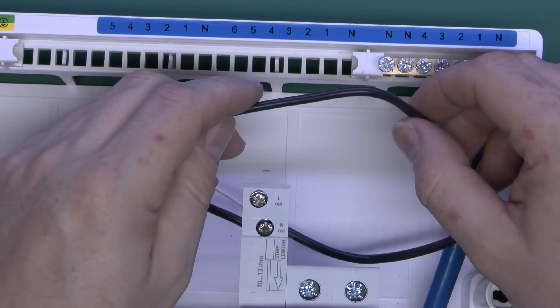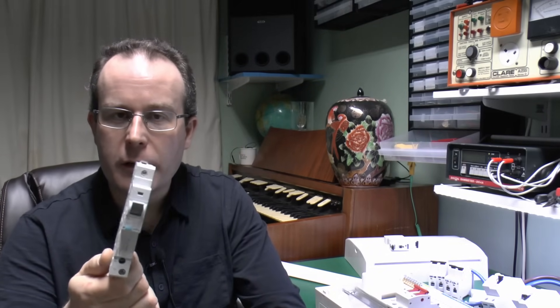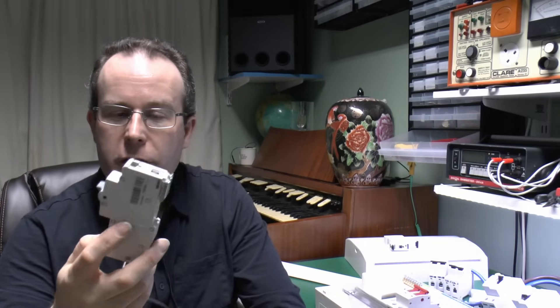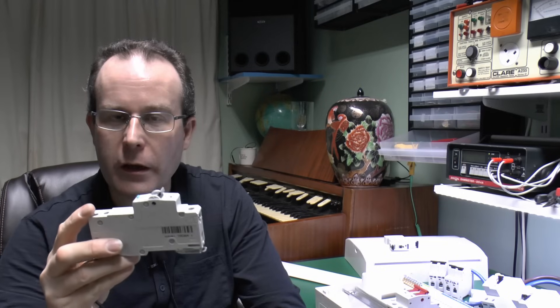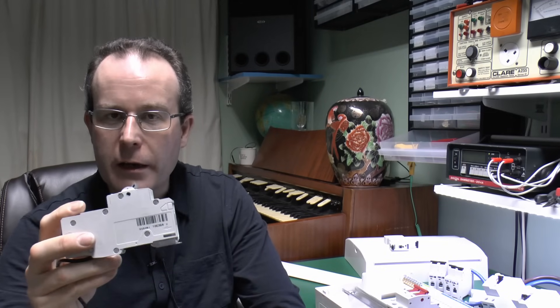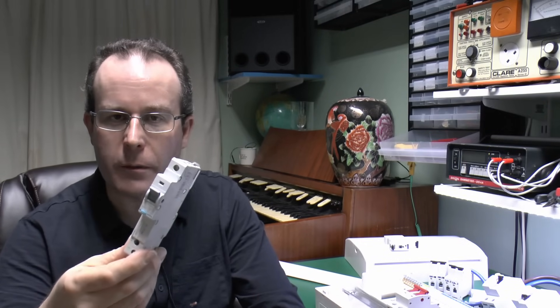So look at RCBOs and how they fit into a typical consumer unit and it's just the circuit breaker part with the overload and short circuit functionality with the RCD as in the sensing the difference between line and neutral added into the top.